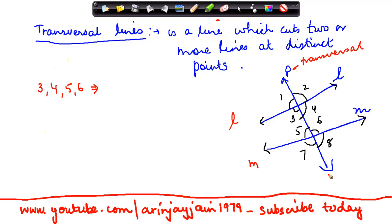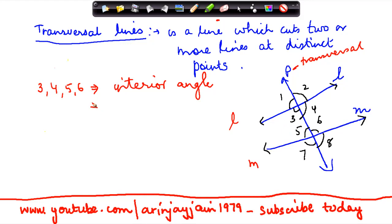These angles are called interior angles. Interior means inside — so inside these two lines, the angles which are there are known as interior angles. As a corollary, the others — angles one, two, seven, and eight — are exterior angles.